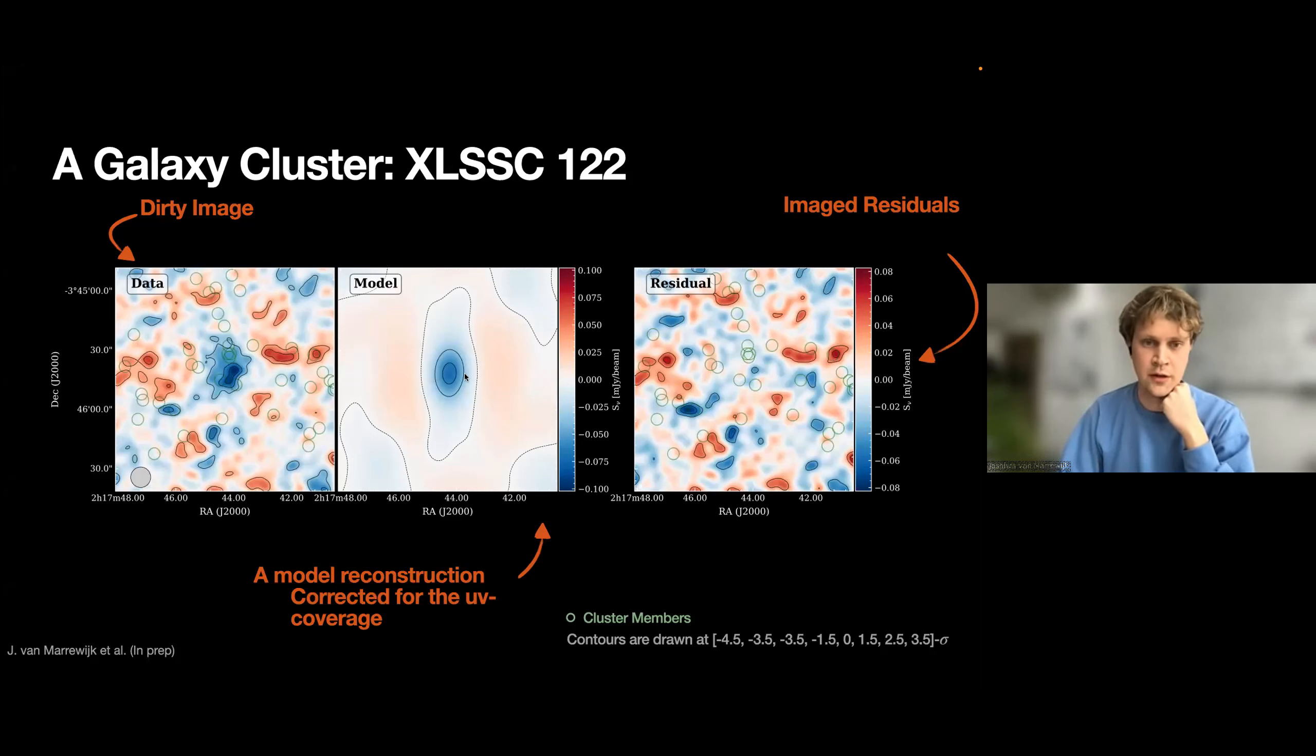And we want to model the pressure profile. We do this in the visibility plane, and we'll go into more detail there. And you can really see the residuals here. A single pressure profile projected on a 2D plane, introducing some ellipticity, can describe the data very well. But this is the cluster we're looking at. You can see the decrement here in blue—negative surface brightness—and then this red circle around it, which is the dirty beam pattern.